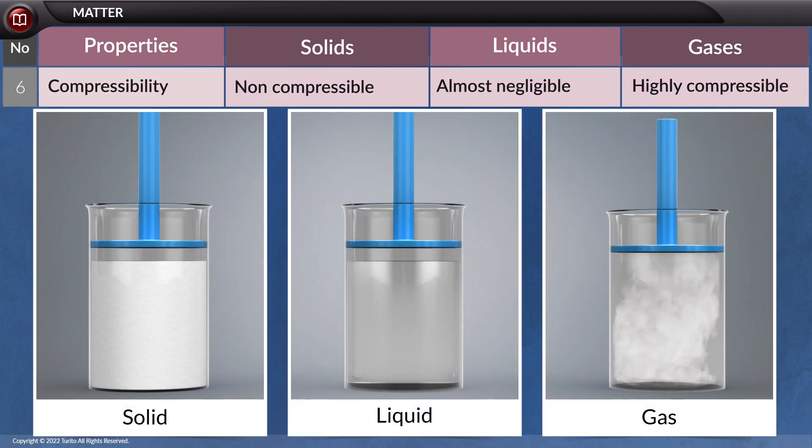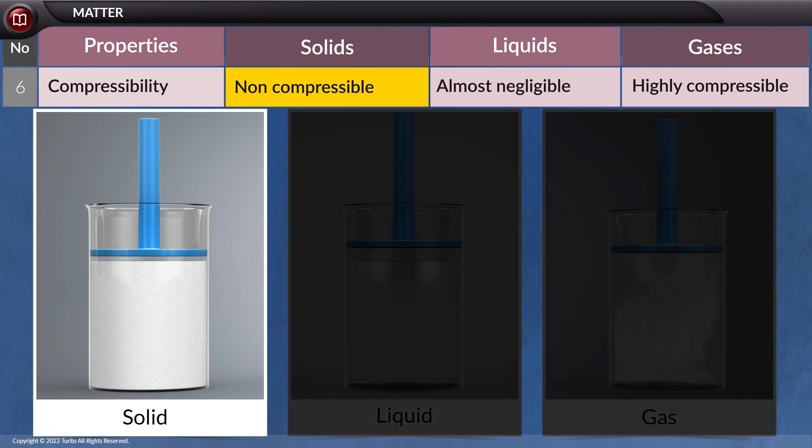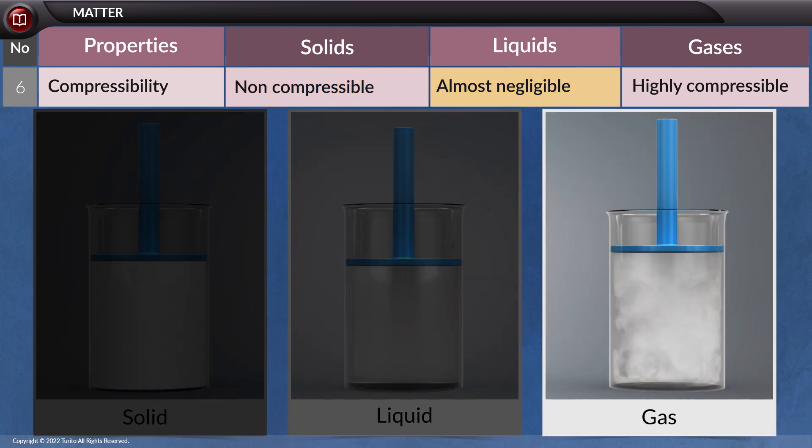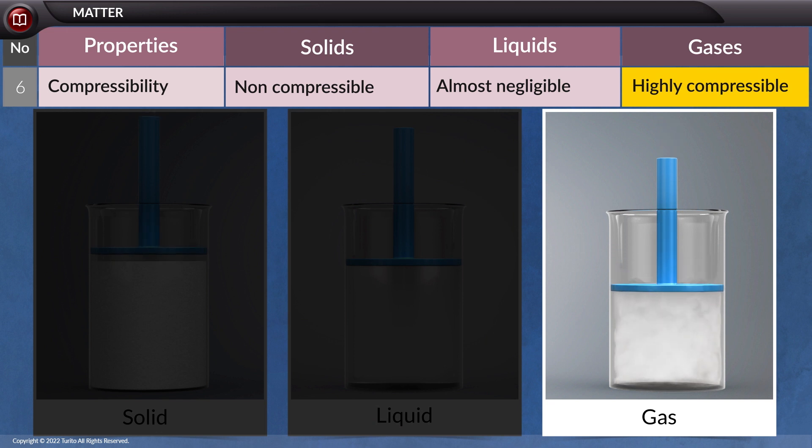Followed by this is the property called compressibility. When it comes to solids, they are particularly inflexible. When it comes to liquids, compressibility is almost non-existent. Gases, on the other hand, are extremely compressible.